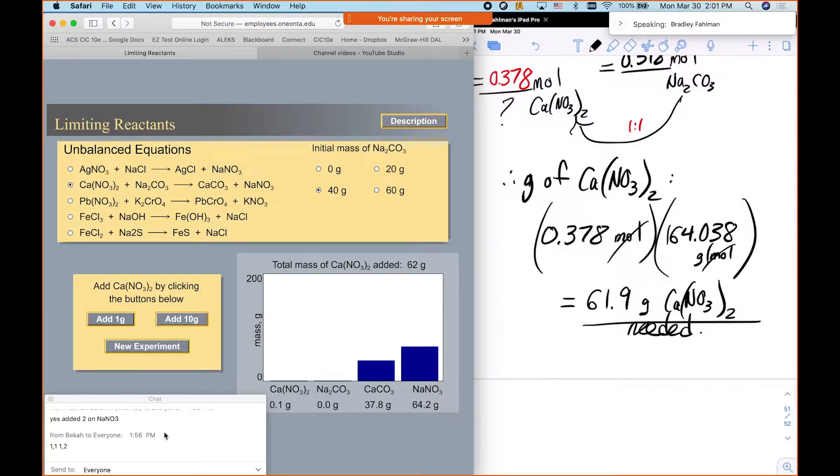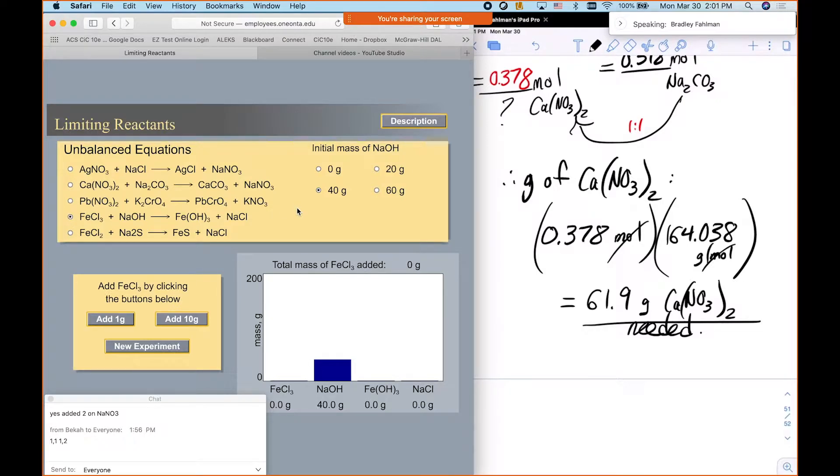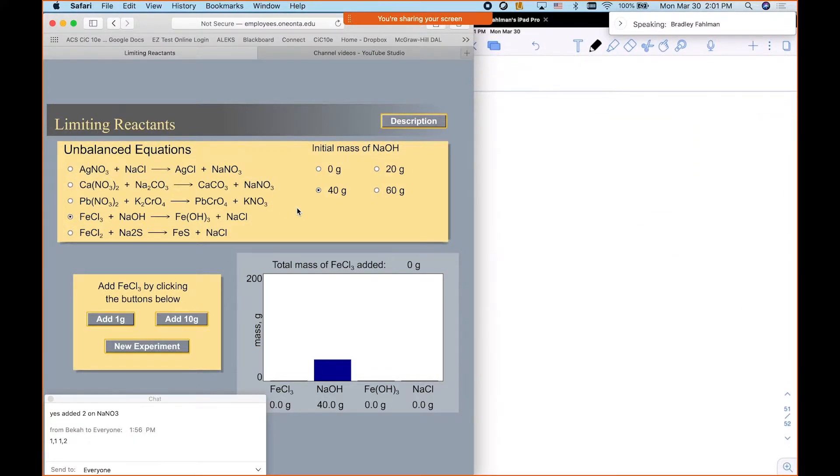Okay. So this website, the link is here, will give you extra practice. It's got a few other equations here that you can balance and then work out these different amounts. What would be a tricky one? Let's see. So three. Yeah, what about this one? Let's do this one here. So iron chloride, iron 3 chloride. Okay. And in this one, I want you, so we'll say 20 grams of sodium hydroxide. It goes into this plus sodium chloride.